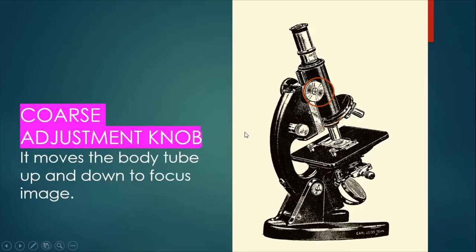Coarse adjustment knob. It moves the body tube up and down to focus the image. It is also used for initial focusing.